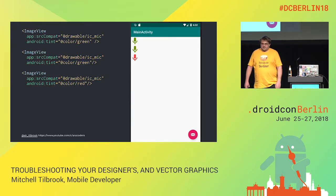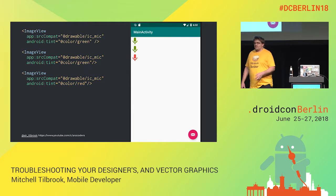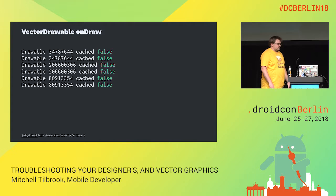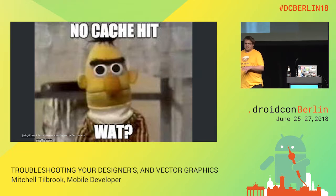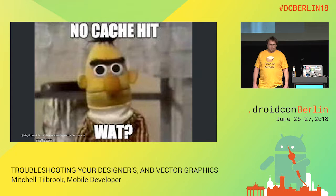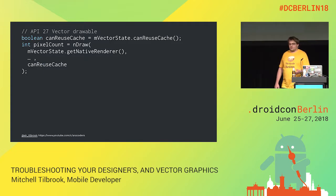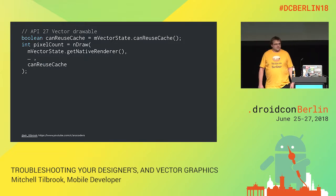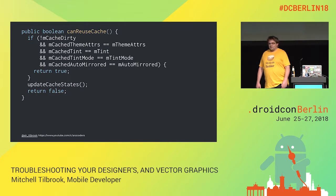But what happens if I apply tint? The Android documentation says that the vector drawable should hit the cache as long as the size is the same. But we're not — we're missing the cache. Something is happening, and we keep missing the cache no matter how many times I draw this icon. So if we dig into the vector drawable code, we can start to get an idea of what's going on. There's a function called canReuseCache — let's have a look at that.